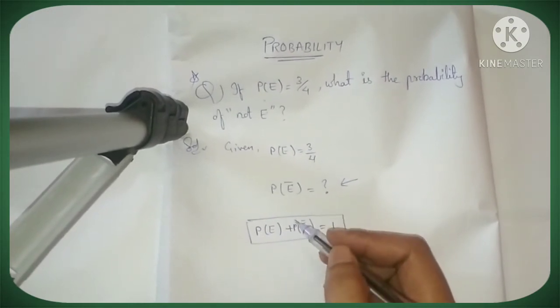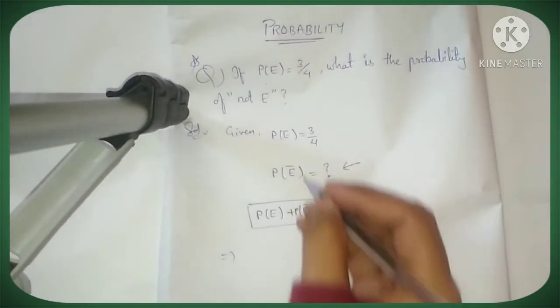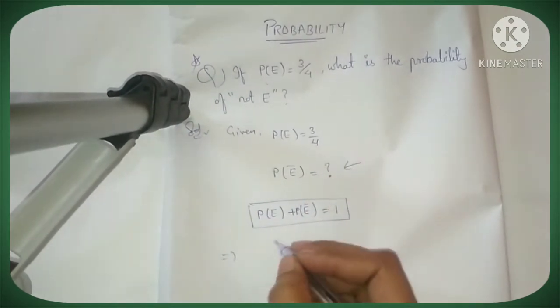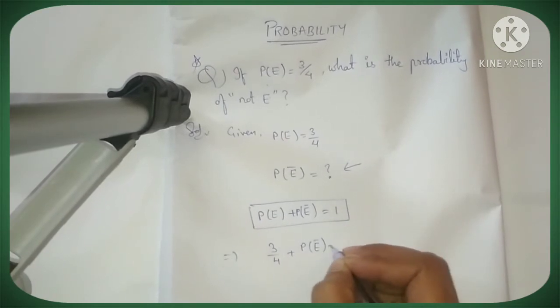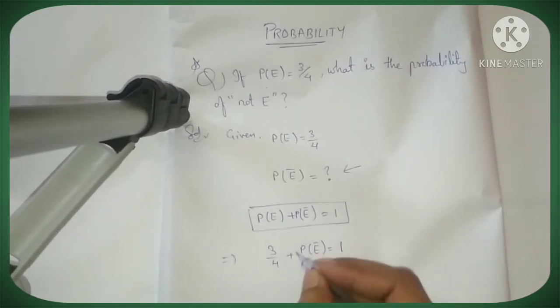How? By substituting the P(E) value over here. The P(E) value is 3/4. So 3/4 + P(not E) - we have to find P(not E). Then we will send this to that side.